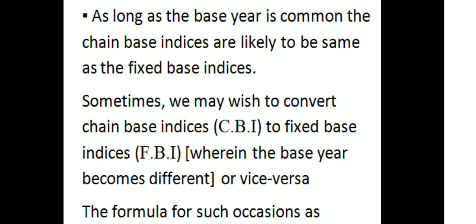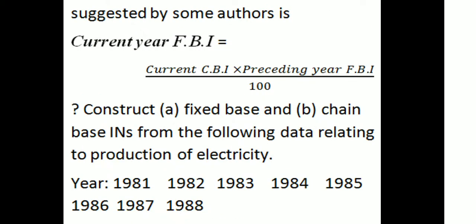Sometimes we may wish to convert Chain-based Index Numbers (CBI) to Fixed-based Index Numbers (FBI), or vice versa, when the base year becomes different. The formula for such occasions is: Current Year FBI = (Current Year CBI × Preceding Year FBI) / 100.